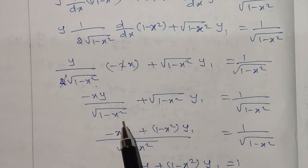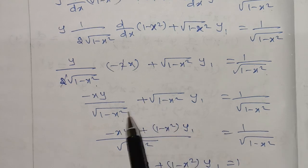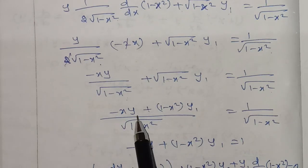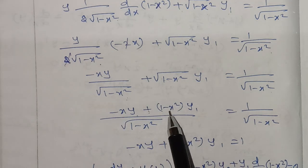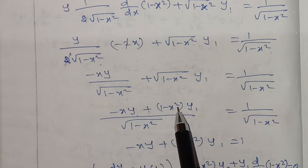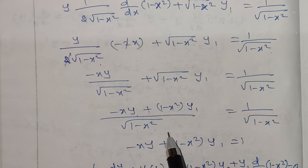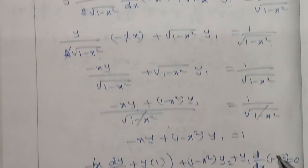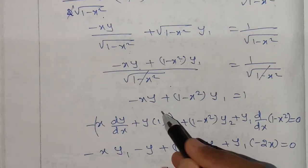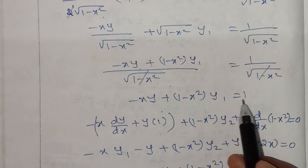The side becomes 1 minus x squared, square root of 1 minus x squared. Cross multiplying, we get: minus x·y plus square root of 1 minus x squared, then 1 minus x squared into y₁. After cancellation, this simplifies to: minus x·y plus (1 minus x²)·y₁ equals 1.